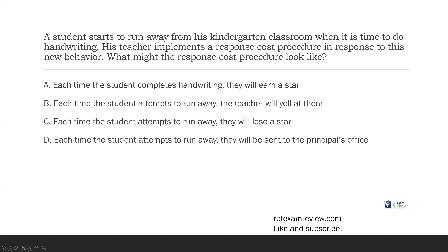Question seven: the student starts to run away from his kindergarten classroom when it is time to do handwriting. His teacher implements a response cost procedure in response to this new behavior. What might the response cost procedure look like? It's a very easy question if we know our definitions — that's why fluency is so important. Let's define response cost: it is the removal of a stimulus or a reinforcer in response to a maladaptive or unwanted behavior. So we're looking for an answer that describes removing something in response to him running away.